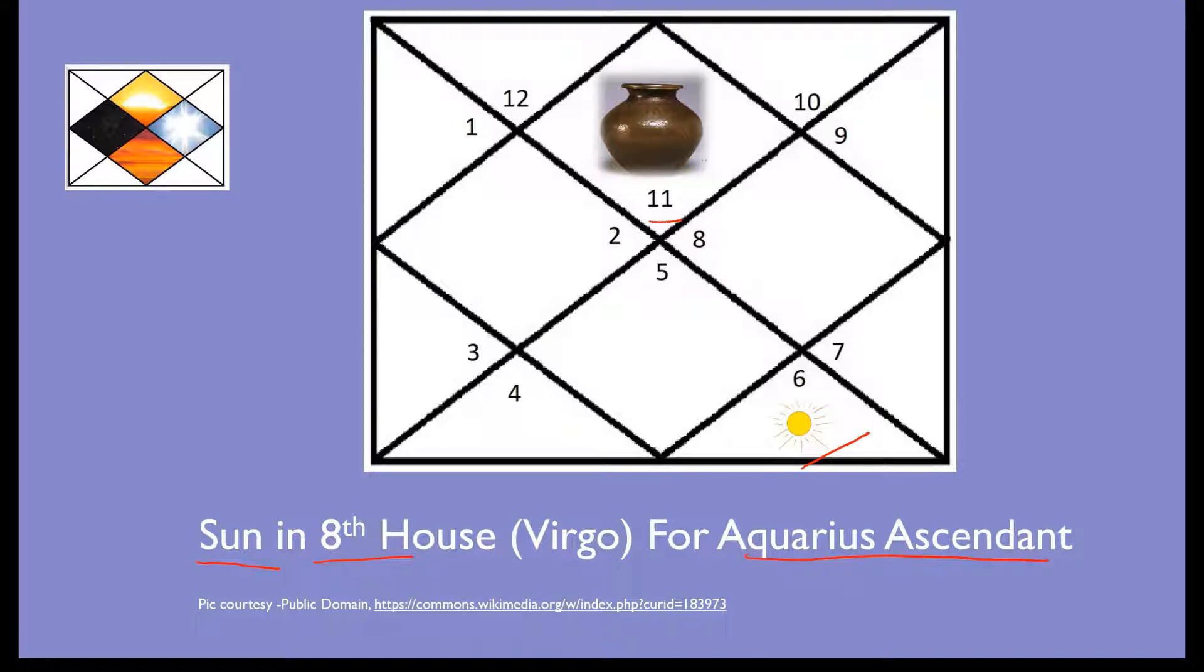When your chart has the water bearer sign Aquarius as the rising sign, Sun becomes the lord of seventh house because seventh house contains the sign Leo, and Virgo goes into the eighth house. So we have a placement where lord of seventh Sun is in the eighth house.